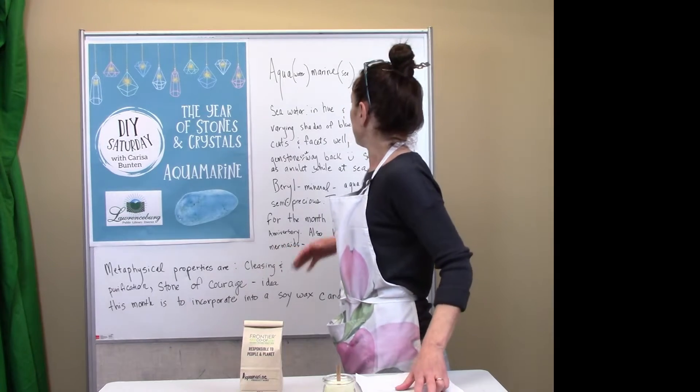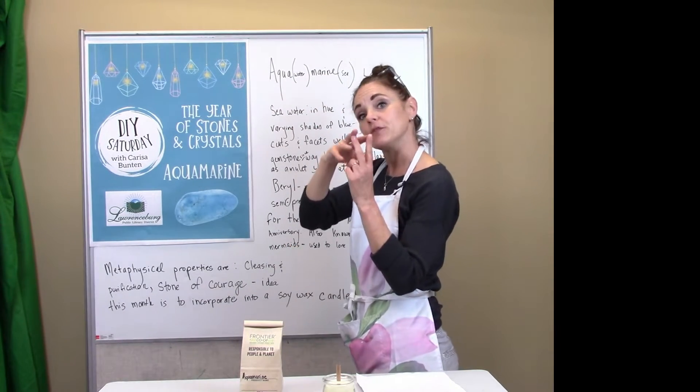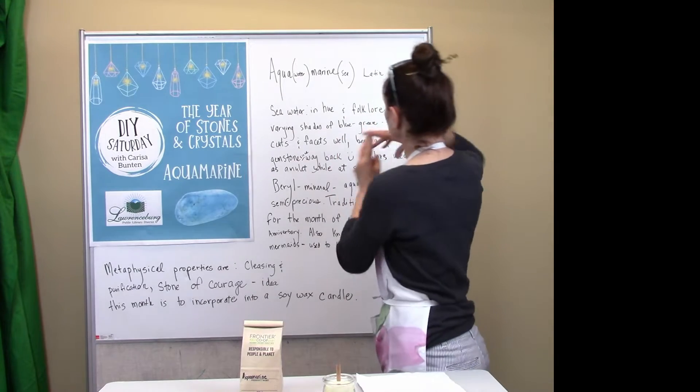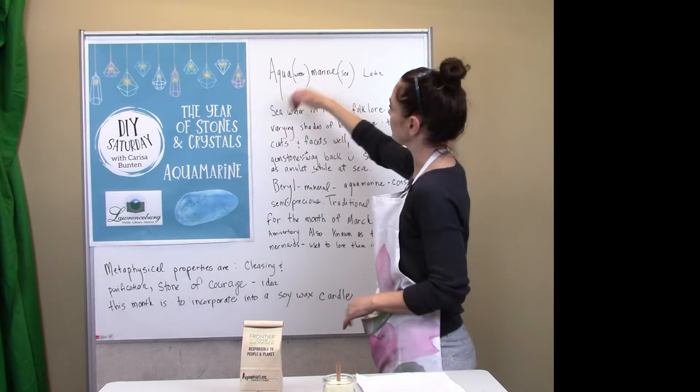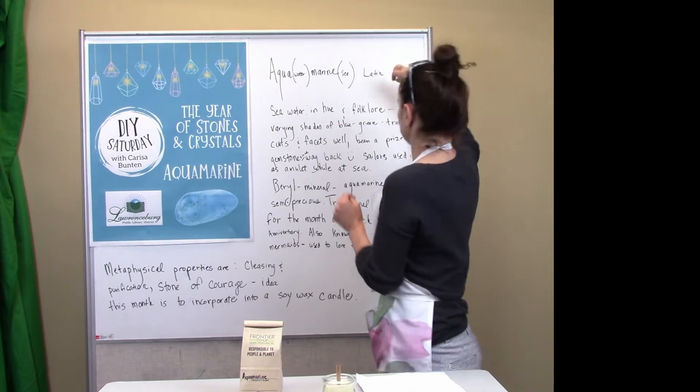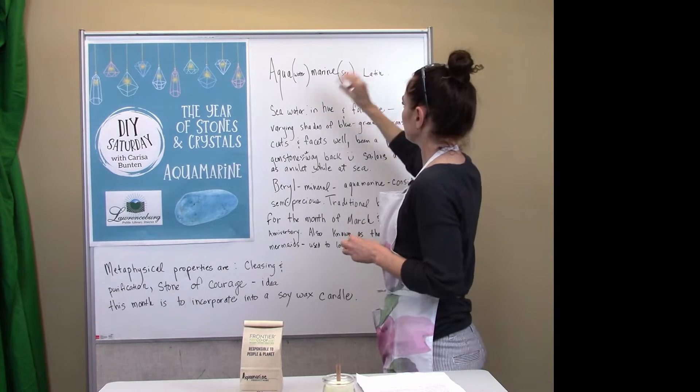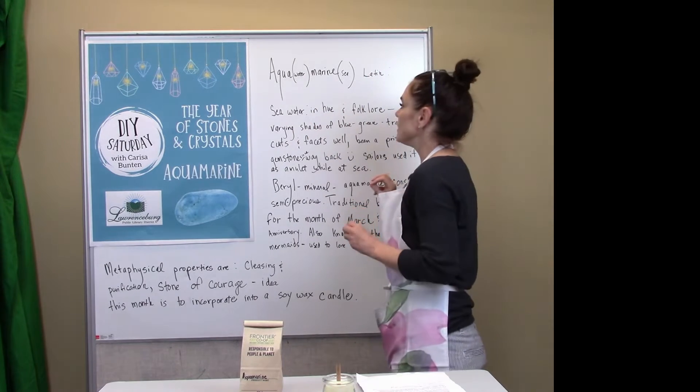So aquamarine is named after two Latin words put together to make the total word: aqua and marine. So we are probably already pretty familiar with aqua meaning water, and marine meaning sea. So the two Latin words put together mean aquamarine that represent the color of the sea or seawater.